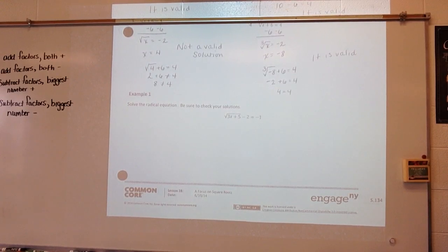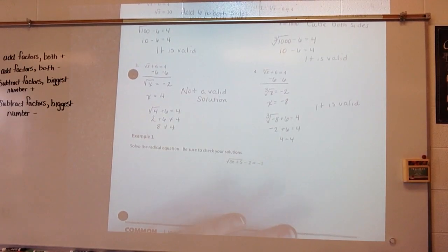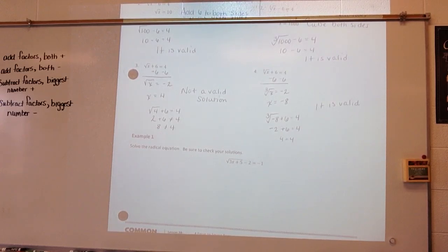What was the first step taken in solving the radical equation in exercises 1 and 2? It was adding 6 to both sides — we isolated our radical. What was the second step? The second step was either to square it or cube it to eliminate that radical.